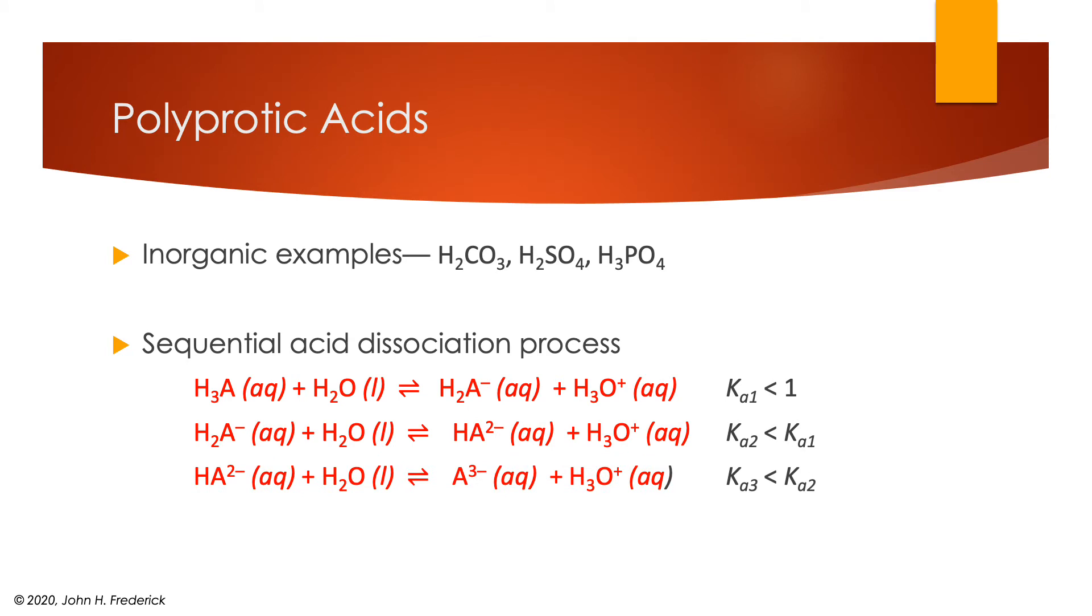Finally, there would be a third proton that could be removed, again, taking the conjugate base from the previous reaction, removing its proton, adding it to water to make a hydronium ion. And that will have an equilibrium constant of Ka3, which, in general, will be less than Ka2. So you see a general diminution of the equilibrium constant as we go down. Each successive H⁺ is harder to remove.